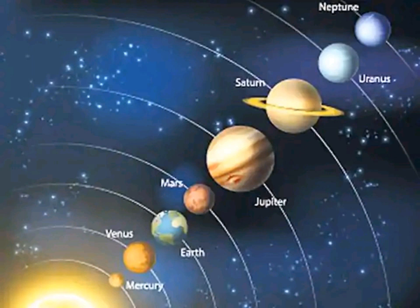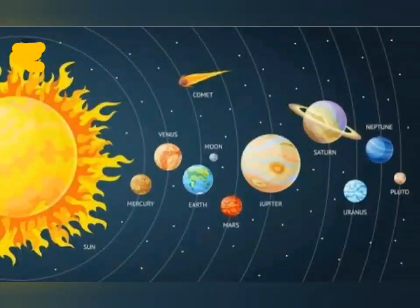Nine planets move around at different distances. Some of these planets have moons that revolve around them. The solar system also includes some other smaller heavenly bodies such as asteroids and comets.